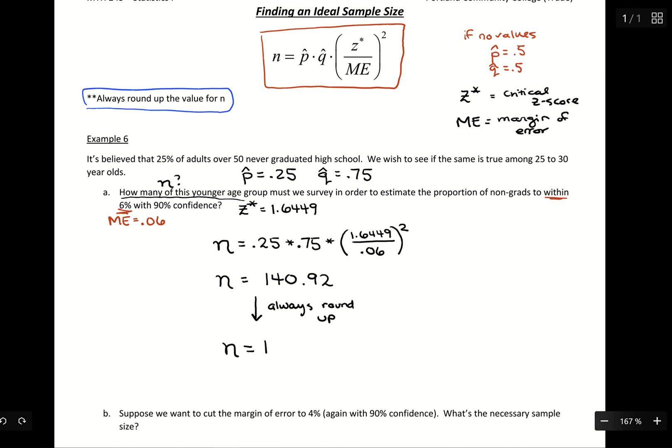But just to be sure, we always follow that rule, we'd want a larger sample size. So we should survey 141 of this younger age group.